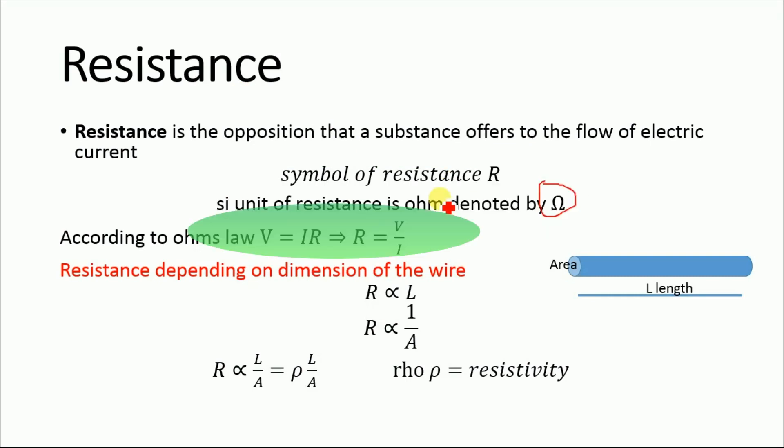According to Ohm's law, we know that voltage V equals IR—voltage equals current times resistance. From this equation, we can derive that resistance R equals V divided by I.